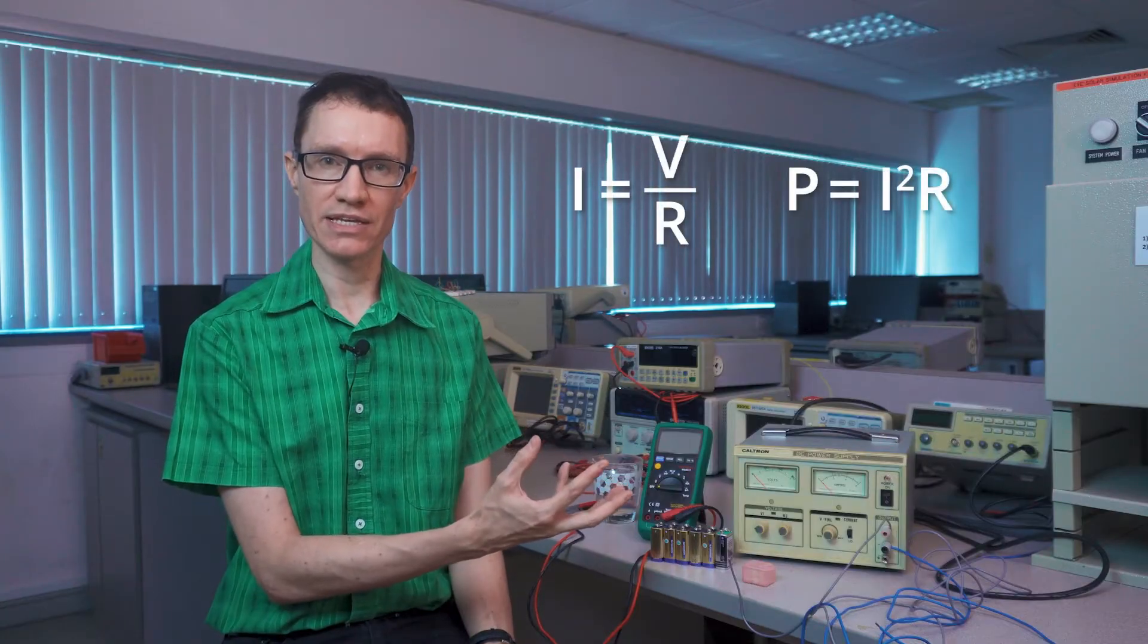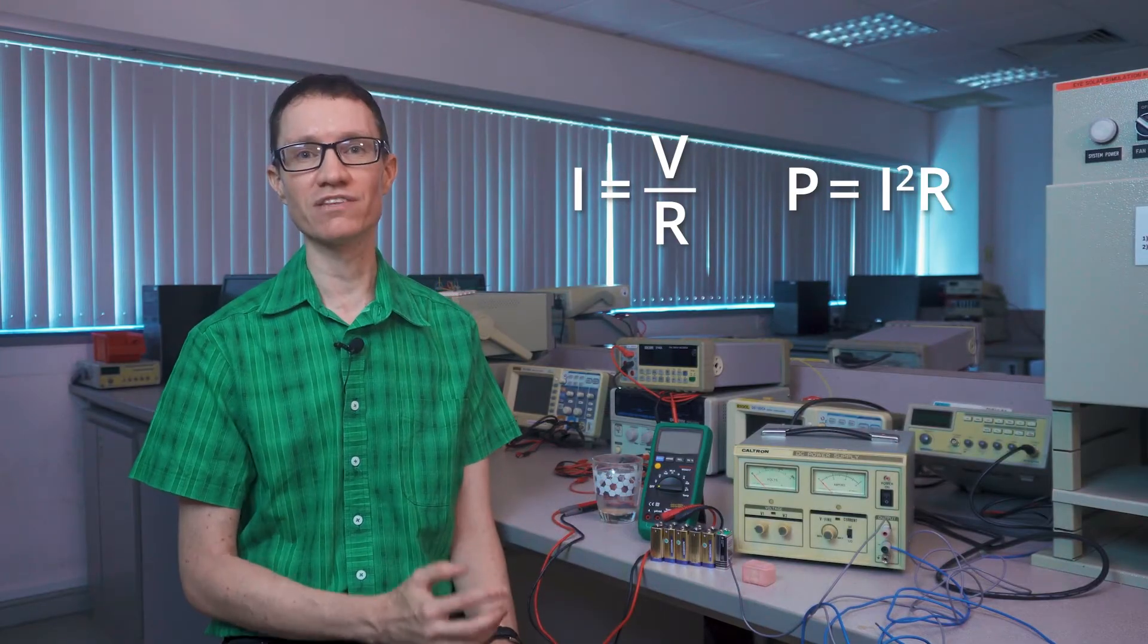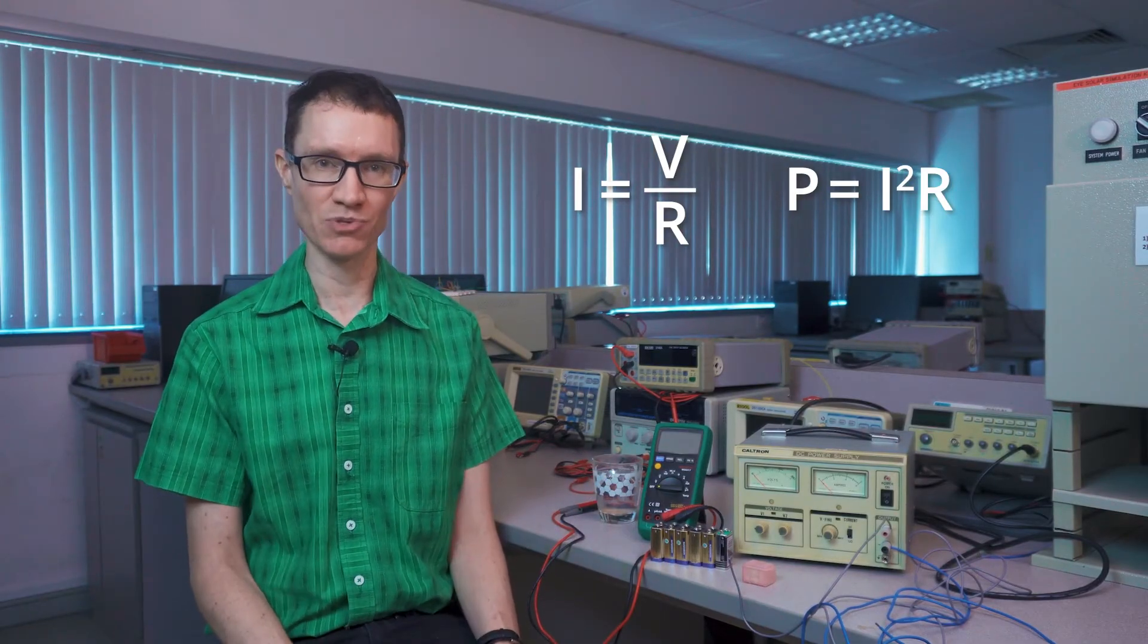From these two formulas, you can see that we want the current to be as low as possible, and we also want the voltage to be as low as possible as well.